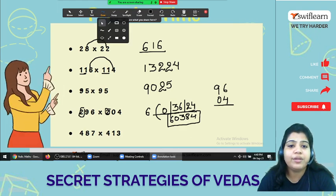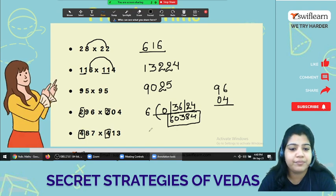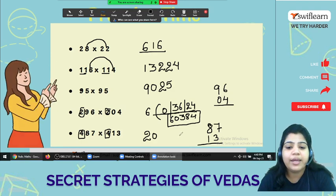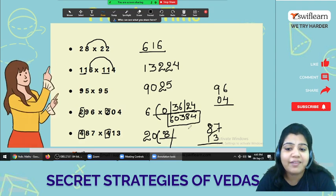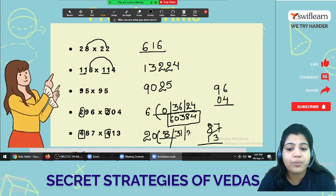Now the next one more question here. 487 times 413. 4 is identical. 4 times 5, 4 times 5 is 20. And now 87 and 13. So 8 times 1, that 8. 8 times 3 is 24. 24 and this 24 plus 7. So it's 31 and then 21.